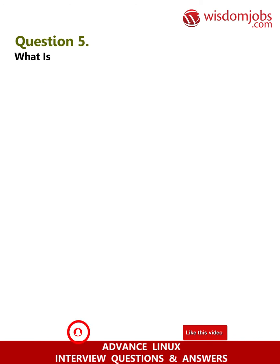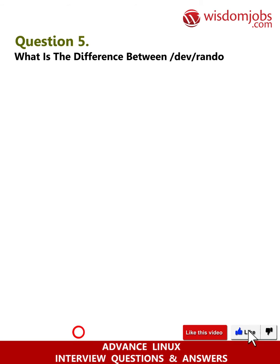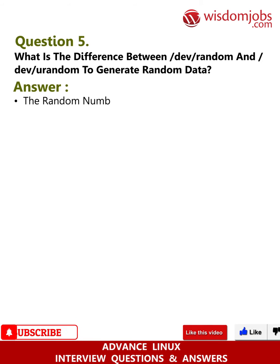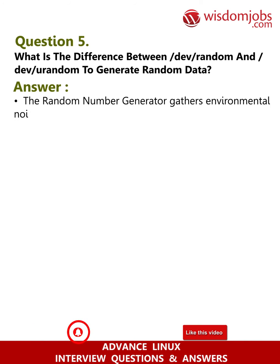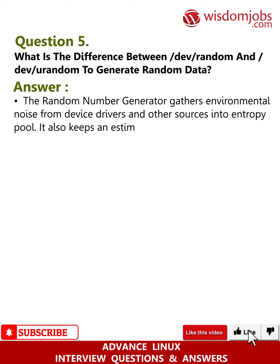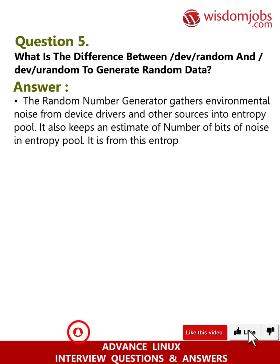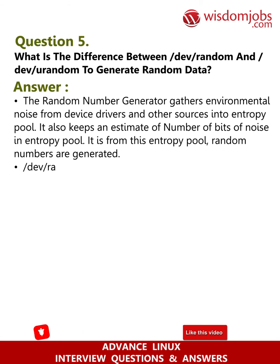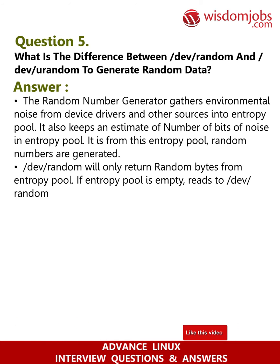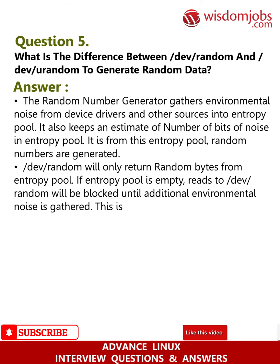Question 5: What is the difference between /dev/random and /dev/urandom to generate random data? The random number generator gathers environmental noise from device drivers and other sources into an entropy pool. It also keeps an estimate of the number of bits of noise in the entropy pool. Random numbers are generated from this entropy pool. /dev/random will only return random bytes from the entropy pool. If the entropy pool is empty, reads to /dev/random will be blocked until additional environmental noise is gathered.